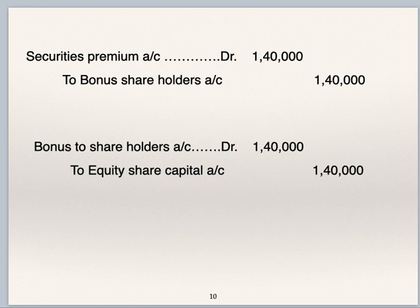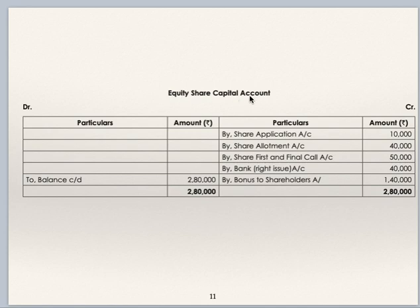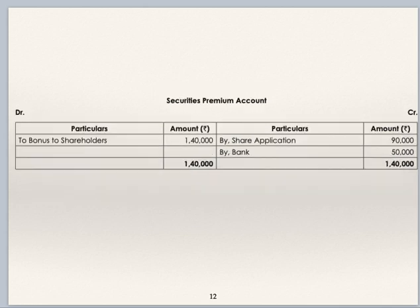Originally the company issued 10,000 shares, then 4,000 right shares were issued, so the total number of shares is 14,000. Bonus shares issued are also 14,000, so the ratio of bonus is 1:1. In the equity share capital account — credit side: by share application, by share allotment, by share first and final call, by bank (rights issue), and by bonus to shareholders account. Securities premium account: by share application, by bank — the entire balance is used for issuing bonus, transferred to bonus to shareholders.